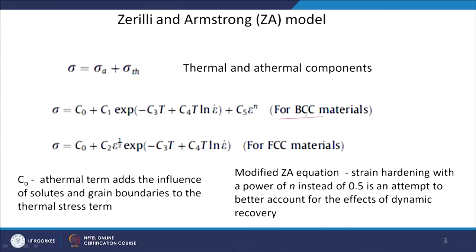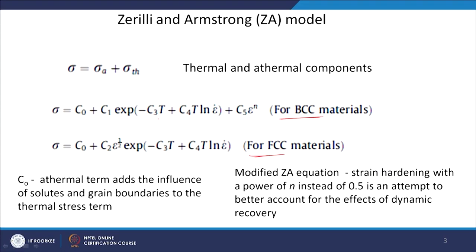Two equations are shown here — one for BCC material and another for FCC material. As we mentioned in the first lecture on constitutive equations, you will have more constants when dealing with physical models. You can see the number of constants has increased — from C0 to C5, along with exponents. For FCC material you have C0, C2, C3, C4, and so on.